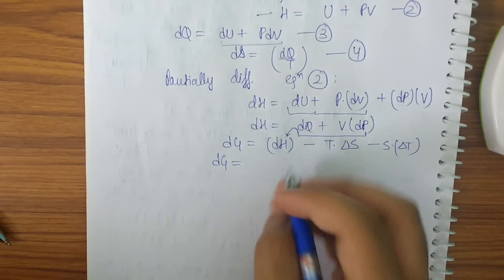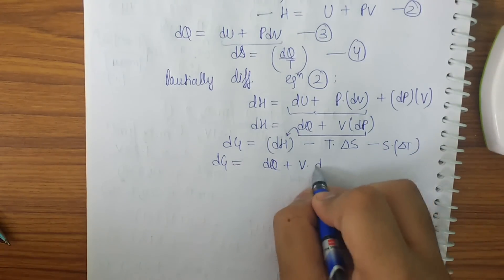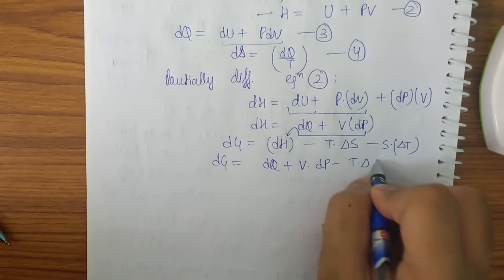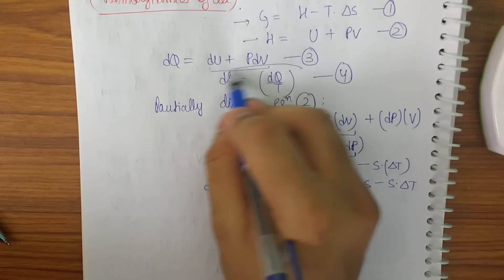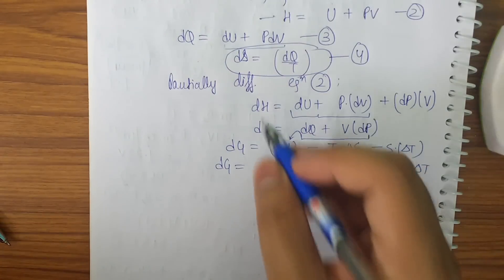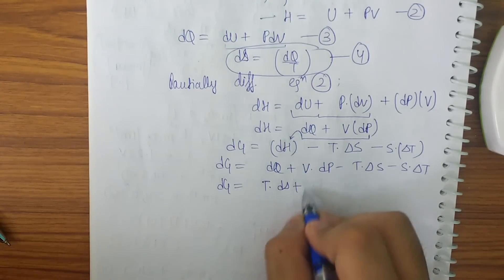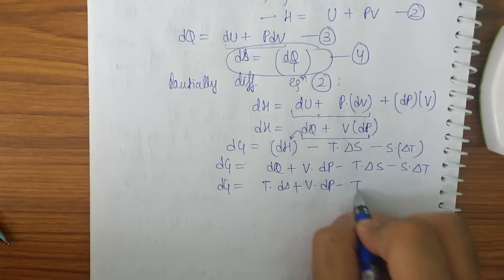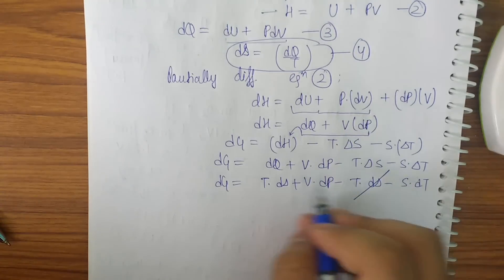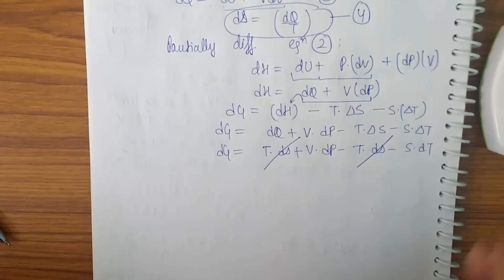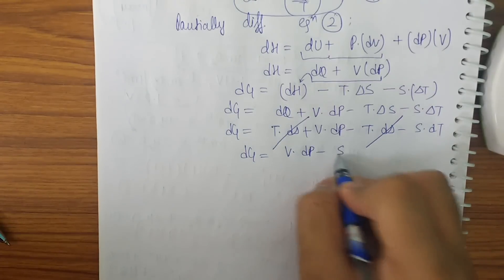So now let us put DH to be this. So DG will be DQ plus V into DP minus T into del S minus S into del T. Now what is DQ? We know from the entropy equation that DQ is equal to T into delta S. So it will be T into Ds plus V into DP minus T into Ds minus S into DT. So T into Ds, T into Ds gets cancelled. We get DG to be V into DP minus S into DT.